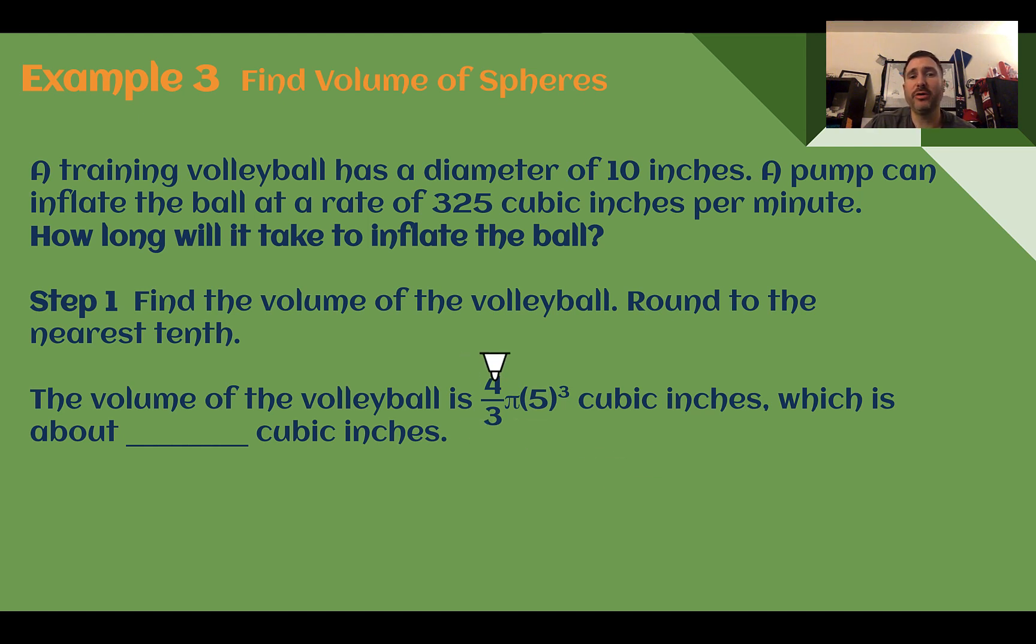The volume for the volleyball would be 4 thirds pi times the radius. We have the diameter of 10, so radius is 5. 5 cubed. If we calculate that out, we can find that the volume is about 523.6 cubic inches.